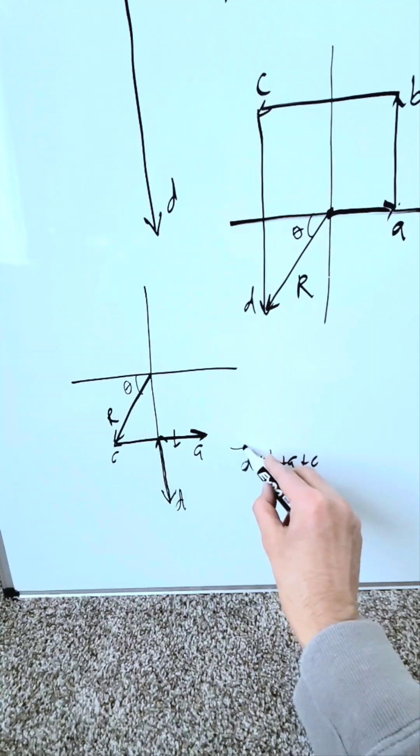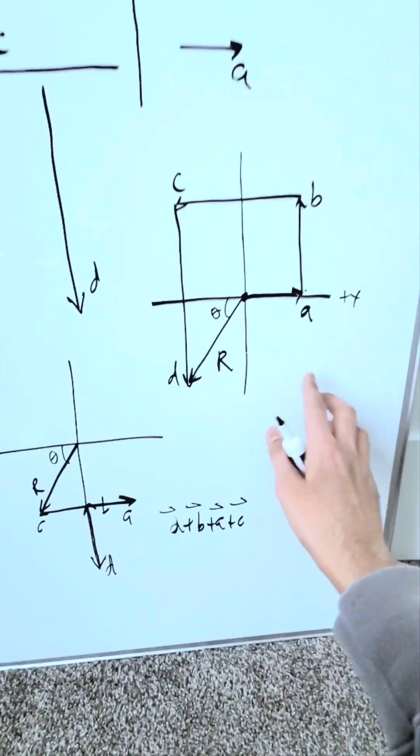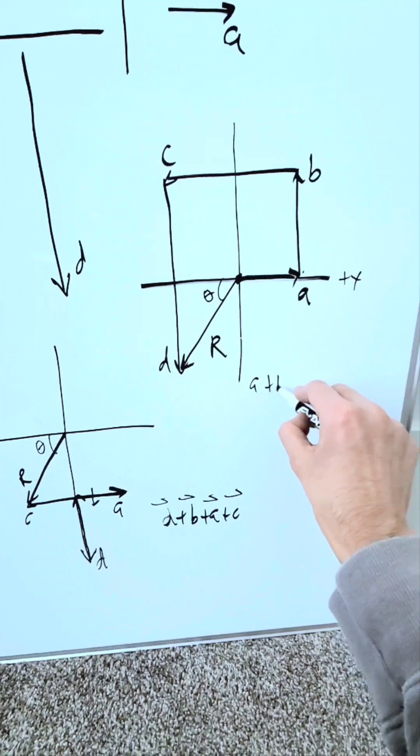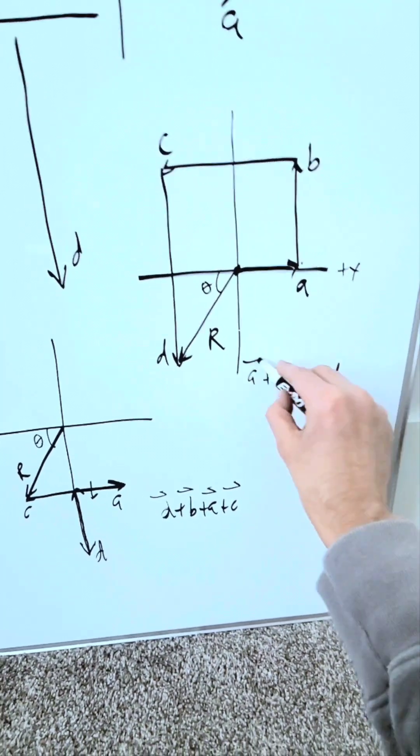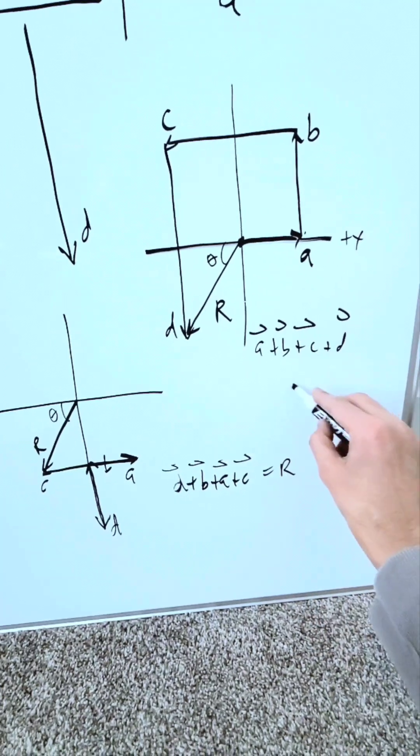But you're seeing here, the order of your vector addition does not matter, and that is true to be the case. Here I saw A plus B plus C plus D. These are your vectors coming through in that order. Here we saw a different order, but the end result, the vector you see, is the same in both cases.